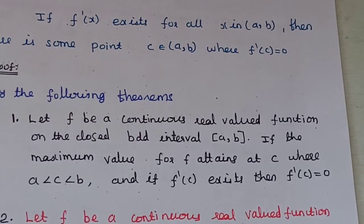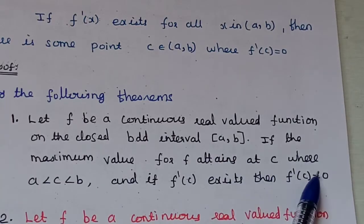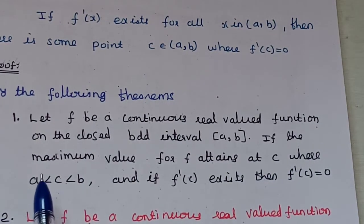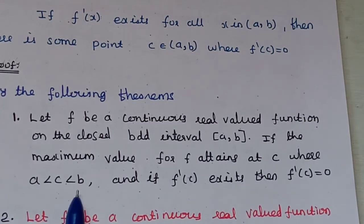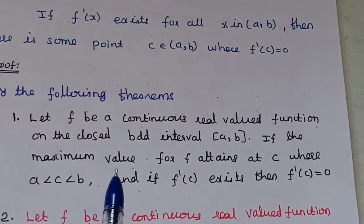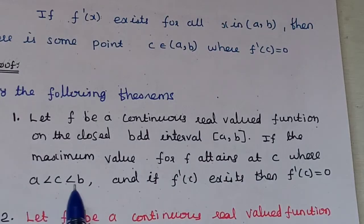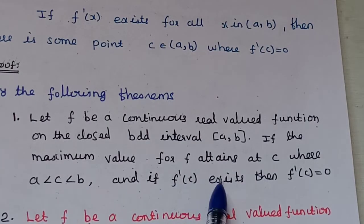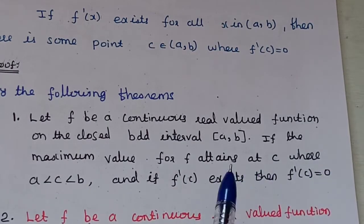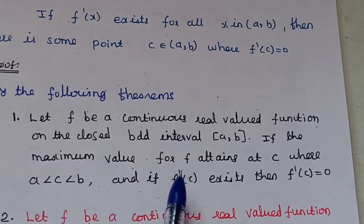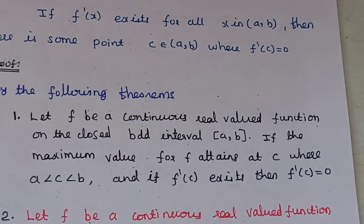First theorem: if the maximum value of f is attained at c, where c belongs to the open interval (a, b) — that is, a < c < b — and if f'(c) exists, then f'(c) is equal to 0. If f attains its maximum value at c in the open interval (a, b) and f'(c) exists, then f'(c) = 0.